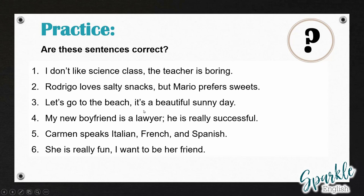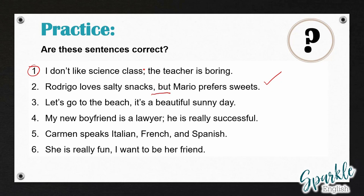So let's correct them together. Number one: 'I don't like science class, the teacher is boring' — this is a comma splice. 'I don't like science class' is an independent clause and 'the teacher is boring' is also an independent clause. These are related, so we're going to change the comma to a semicolon. Number two: 'Rodrigo loves salty snacks, but Mario prefers sweets' — this is correct, it is not a comma splice, because after the comma we have a conjunction. This is a perfectly correct sentence.